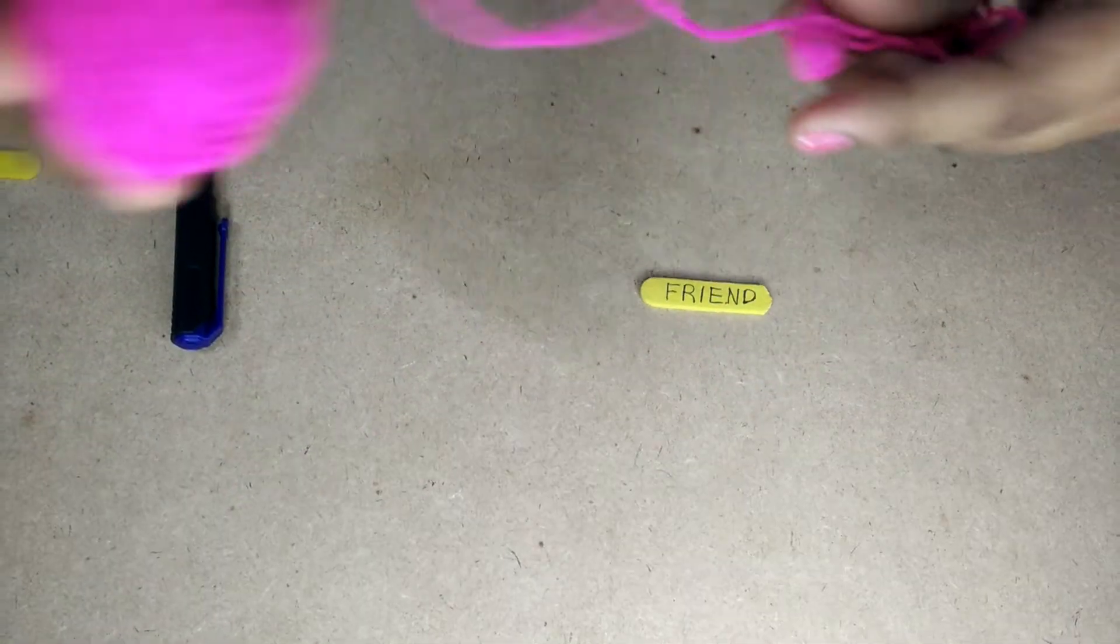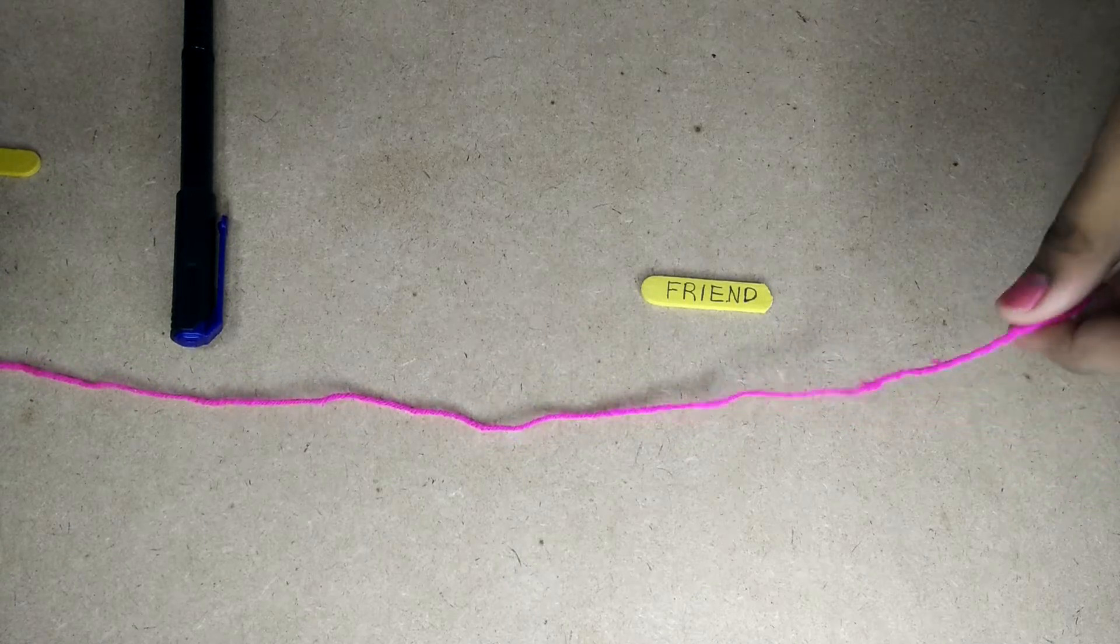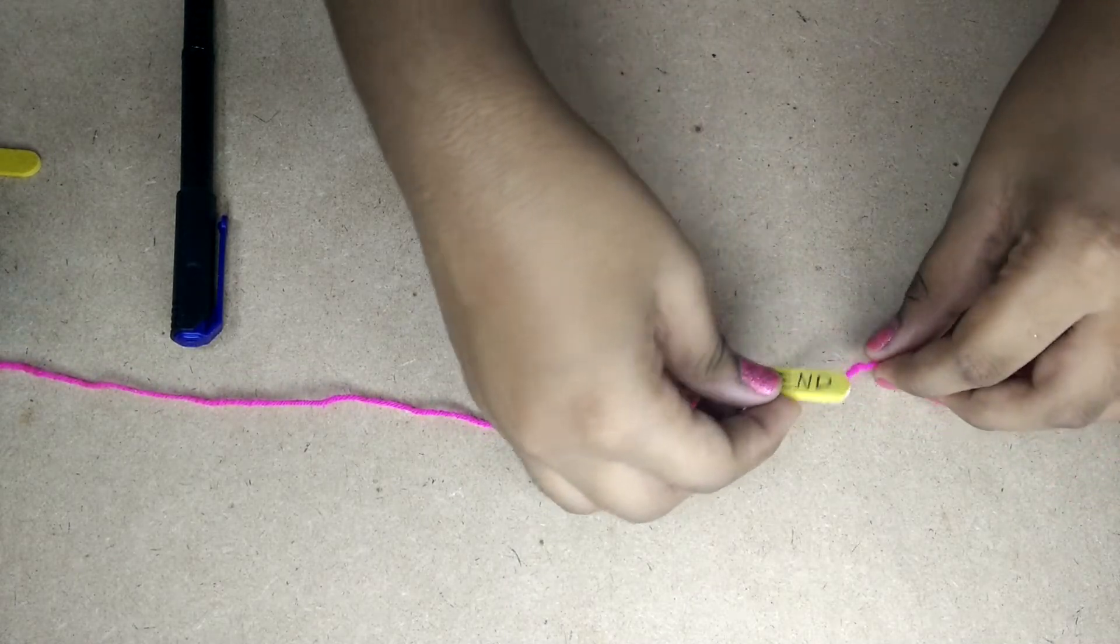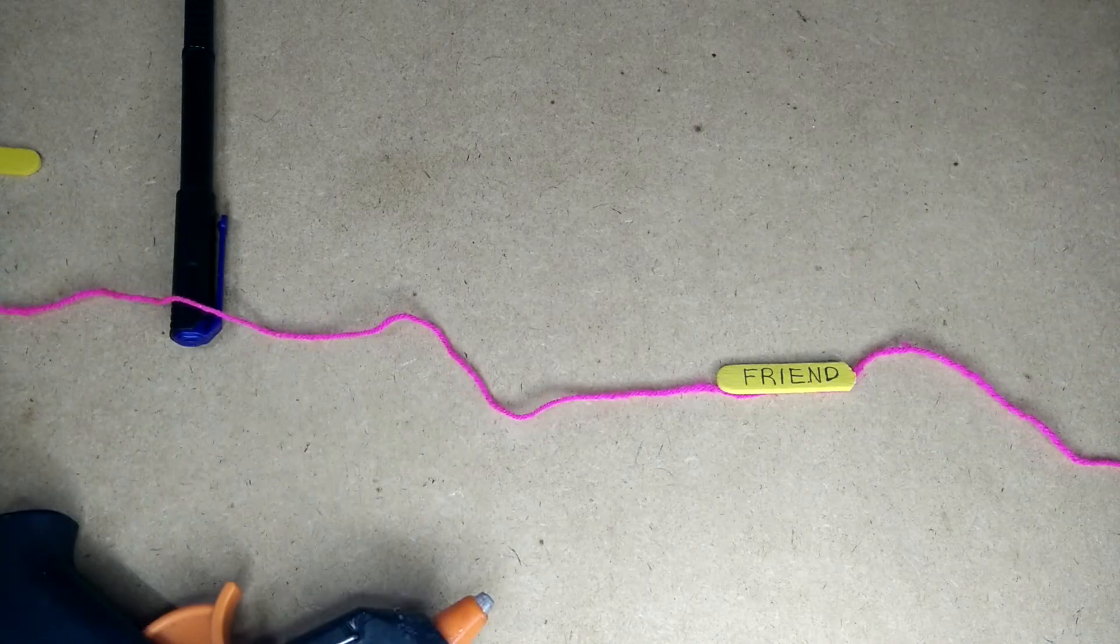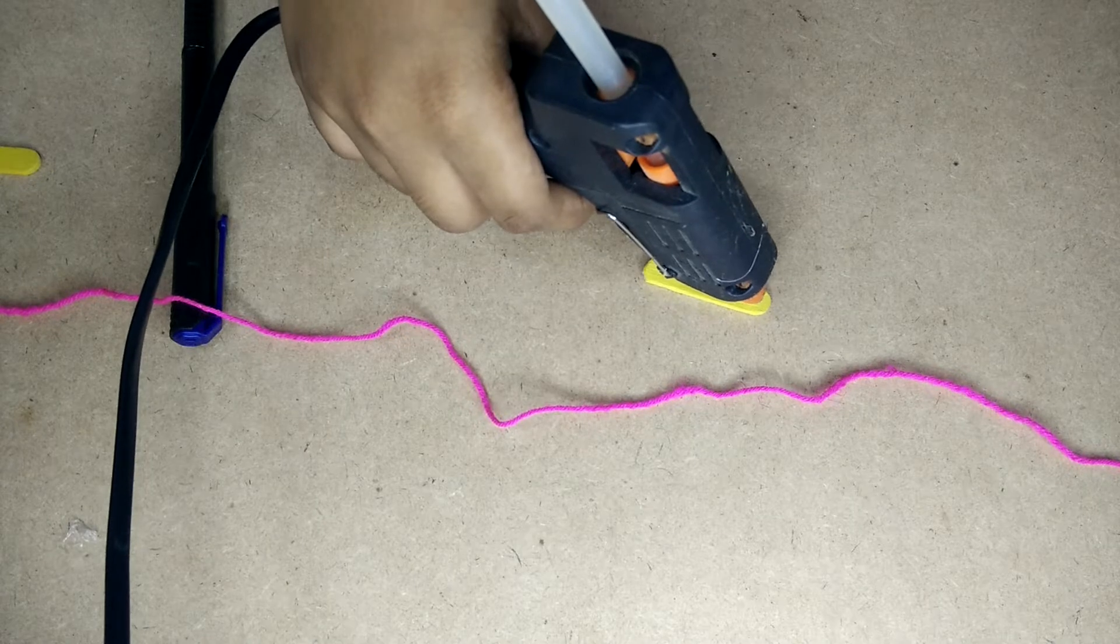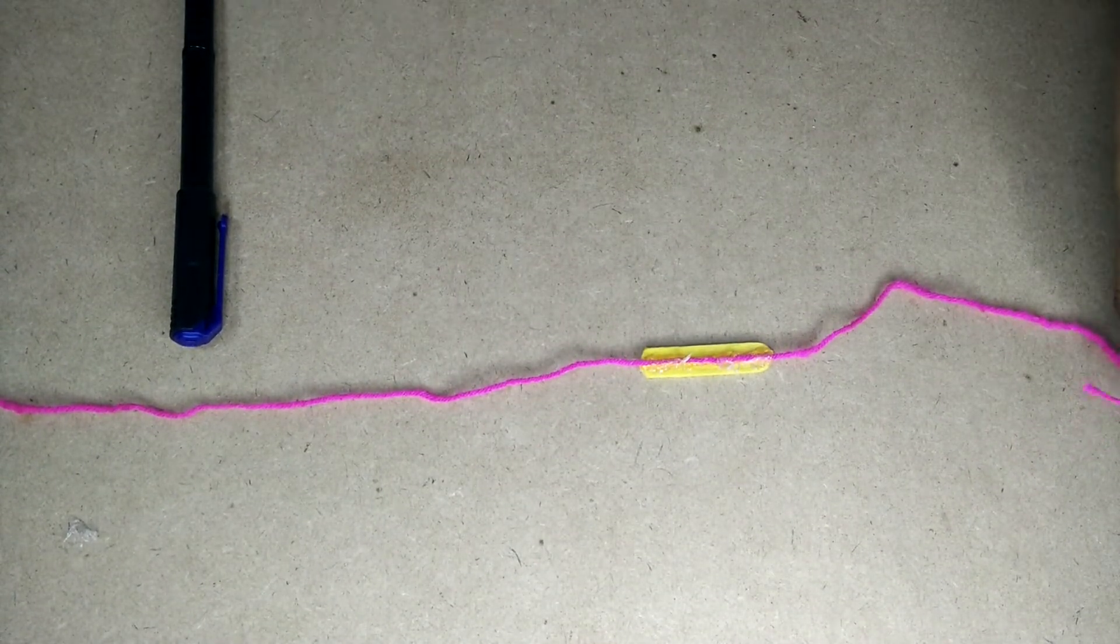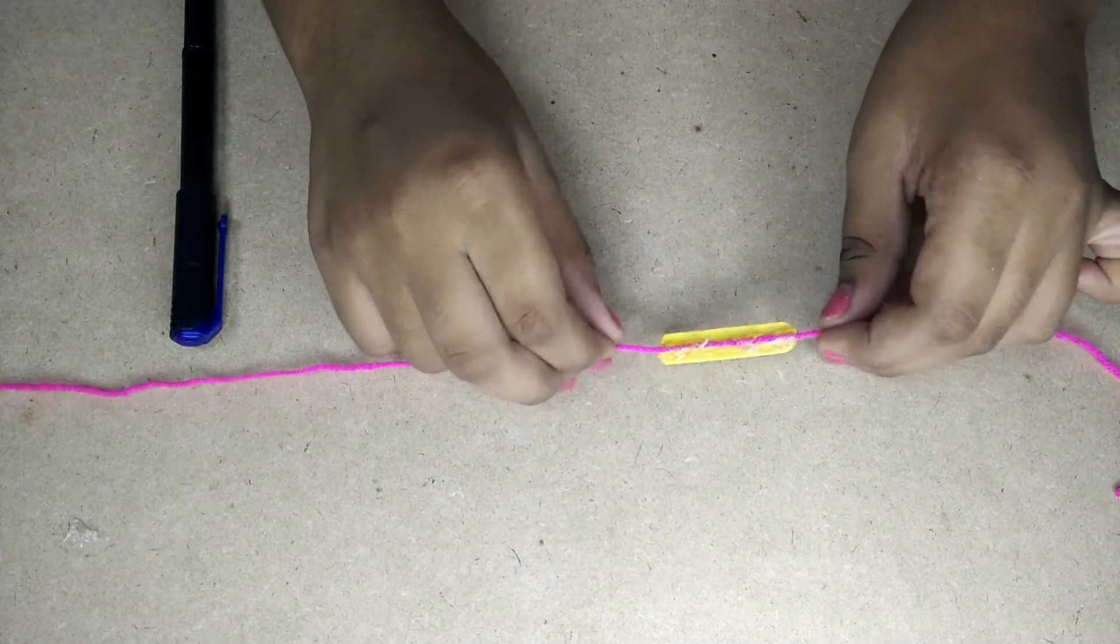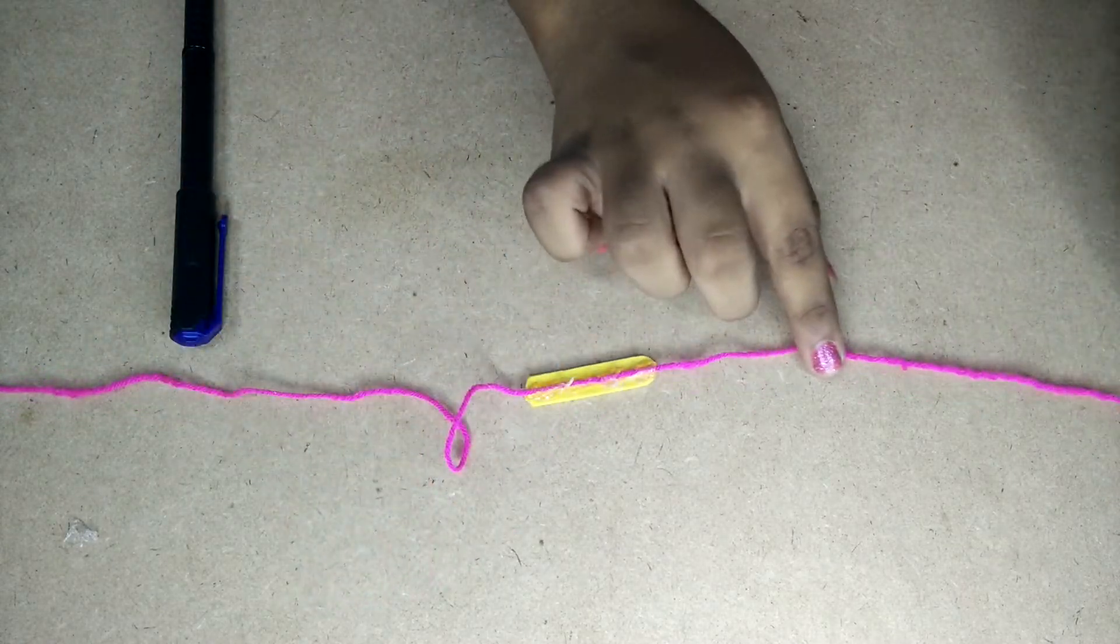Now with this piece, we have to take the yarn and then we have to hot glue it right over here with a hot glue gun. Oh, it's really hot. If you need help, please ask a grown-up or a parent, and after you put the hot glue, you have to stick it onto the thread.